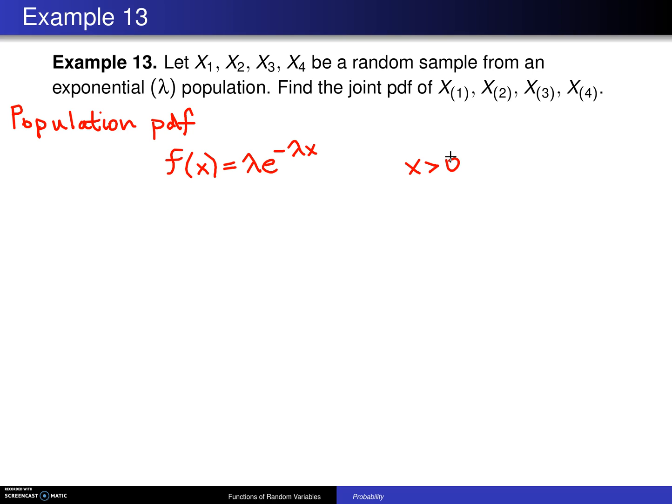Now, using the result on the previous page, the joint probability density function of the first four order statistics, which will be written in this fashion, and again, the indexes here will be x1, x2, x3, and x4.